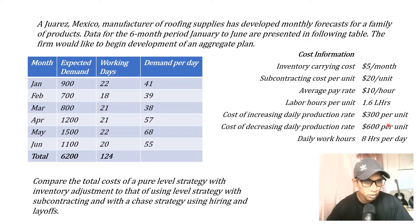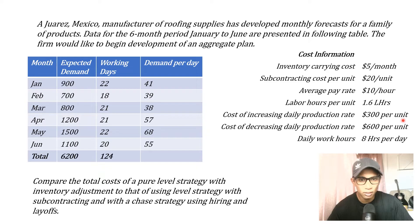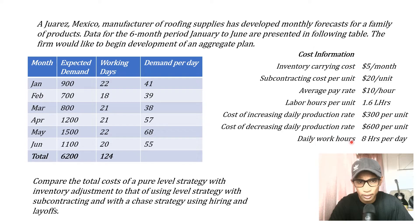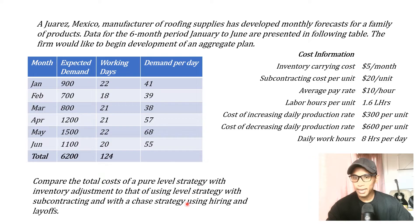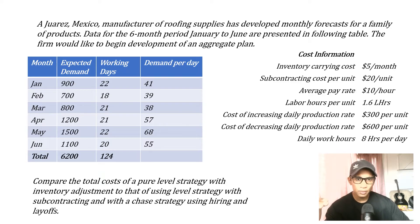This cost is per unit change in daily production, not per worker. If the question gives hiring and layoff costs per worker instead of per unit, you'll have to adjust accordingly. The daily working hours is 8 hours per day. The question asks us to compare three strategies: a pure level strategy with inventory adjustments, a level strategy with subcontracting, and a chase strategy using hiring and layoffs.